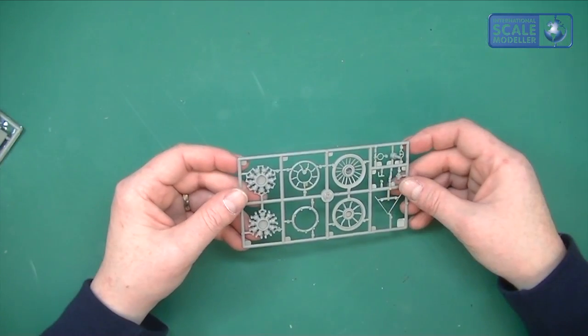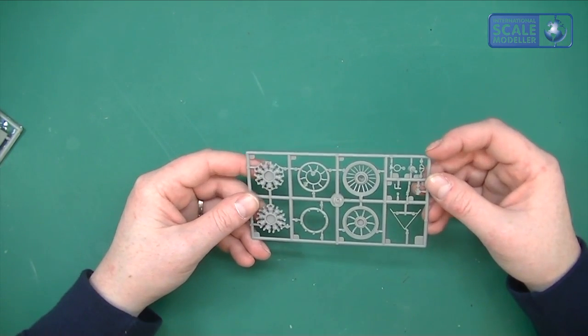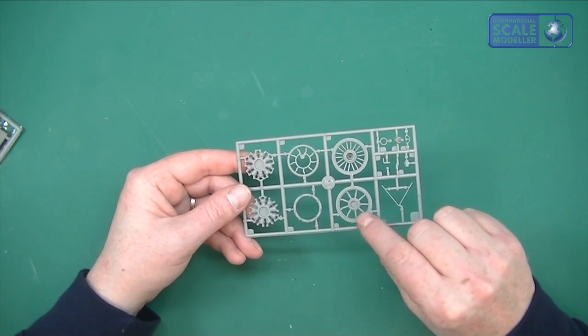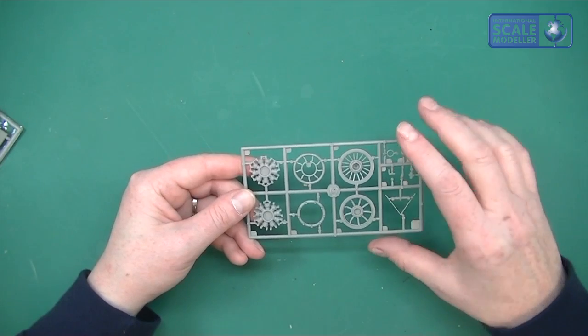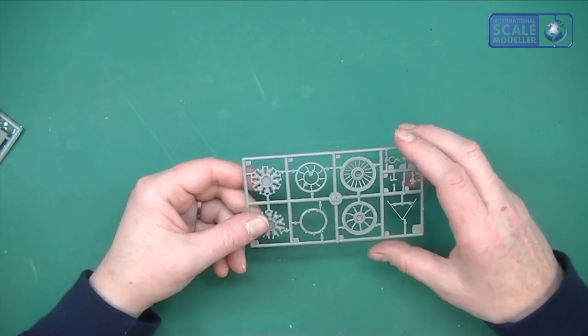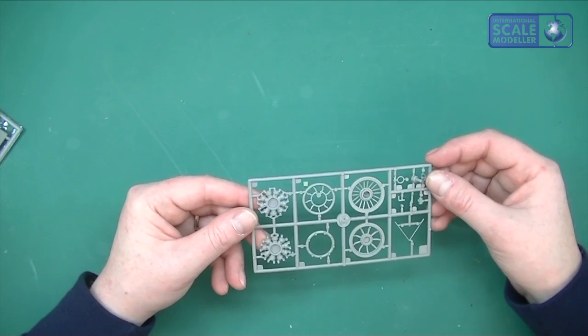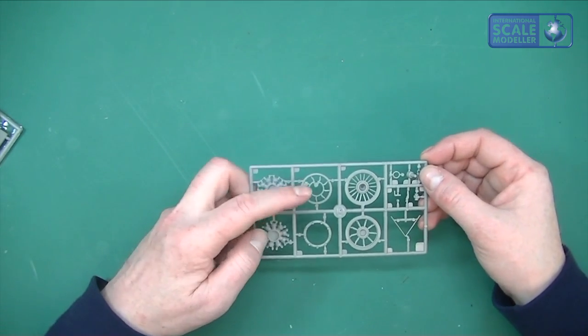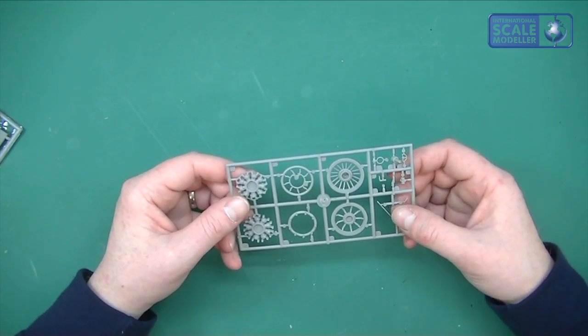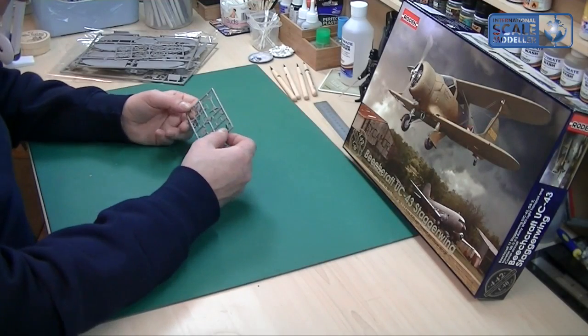So we've got another sprue here with the engine, obviously a radial engine. The detail on that is not too bad. Again there's burring and a little flash all inside here, on all the spokes, which is going to have to be worked on to make it look good. The engine itself, obviously looks like there's two parts there. Not too bad. There's no flash on this bit which is great, or this ring here, and this very fine bit here. So that's small saving graces.